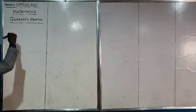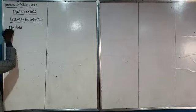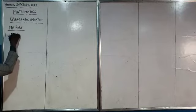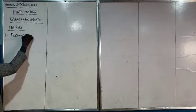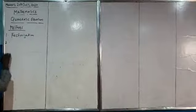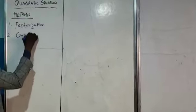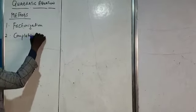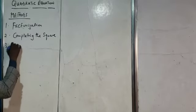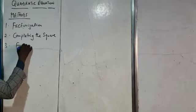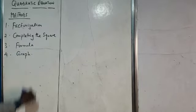First we look at the methods to solving quadratic equations. One is the factorization, two we have the completing square, three we have the formula method, and the fourth one is the graphical method.